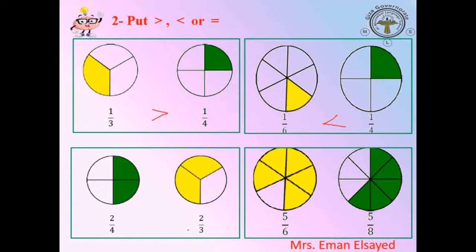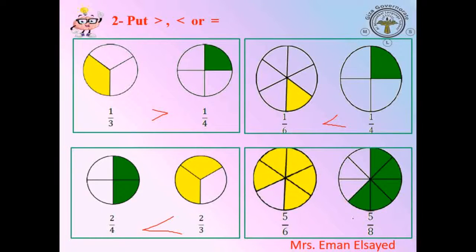Look at the denominator: here it's four and here it's three. Where is the denominator bigger? Four. The biggest denominator is the smallest fraction. So two quarters is smaller than two thirds. This is the crazy fraction rule — when the numerator is the same, the bigger denominator means the smaller fraction. The bigger denominator is the smallest. Very good.